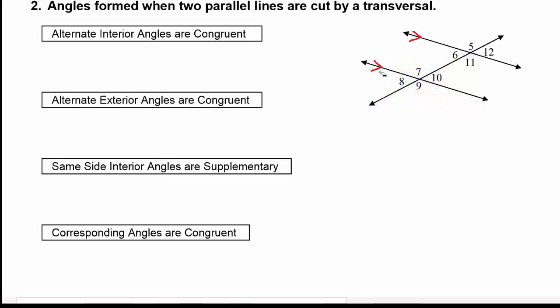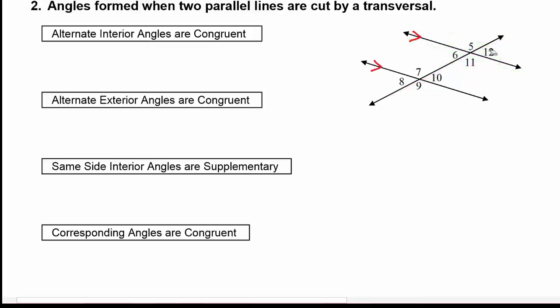The second group is formed by the other parallel line with the transversal, and that's this group of angles: 5, 6, 11, and 12. There are four special angle pairs that you learned in geometry class that we'll use here in trigonometry as well.